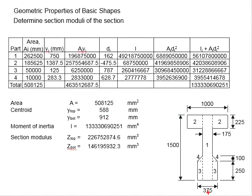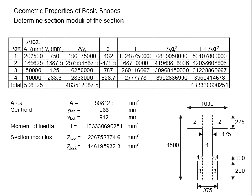You might need to consider the cage for the shear link, or even the minimum cover from the surface of the beam section. With that, the maximum eccentricity is determined, and a vertical straight line is drawn.